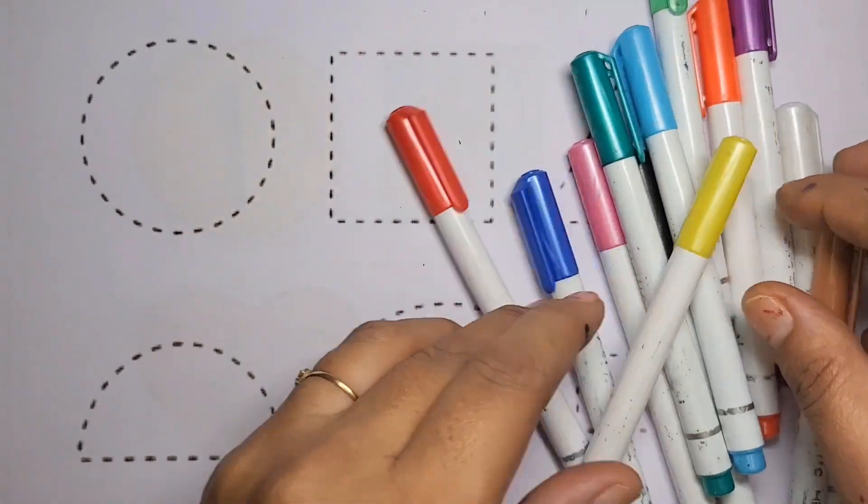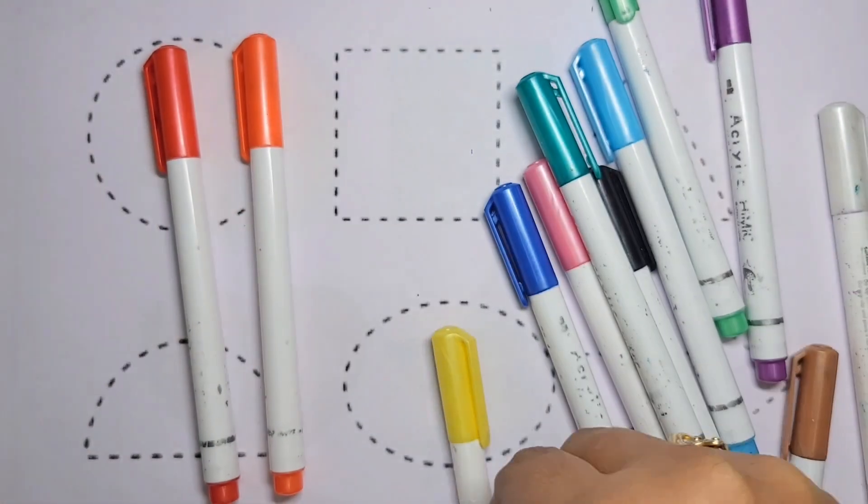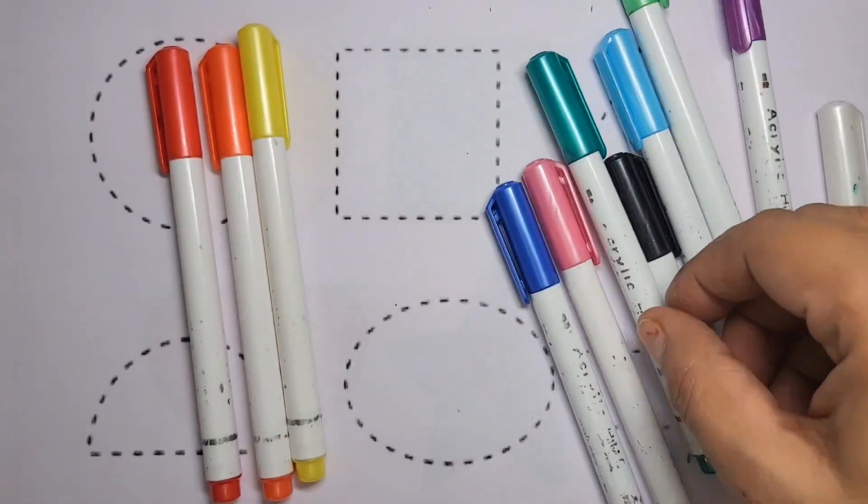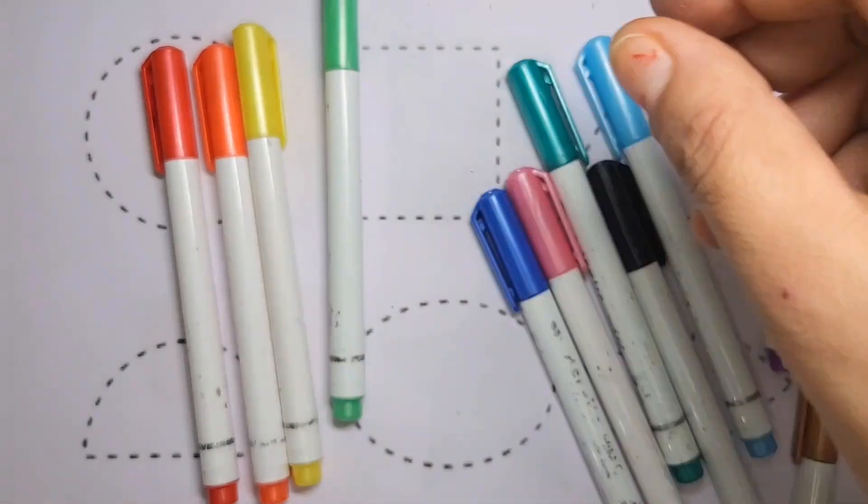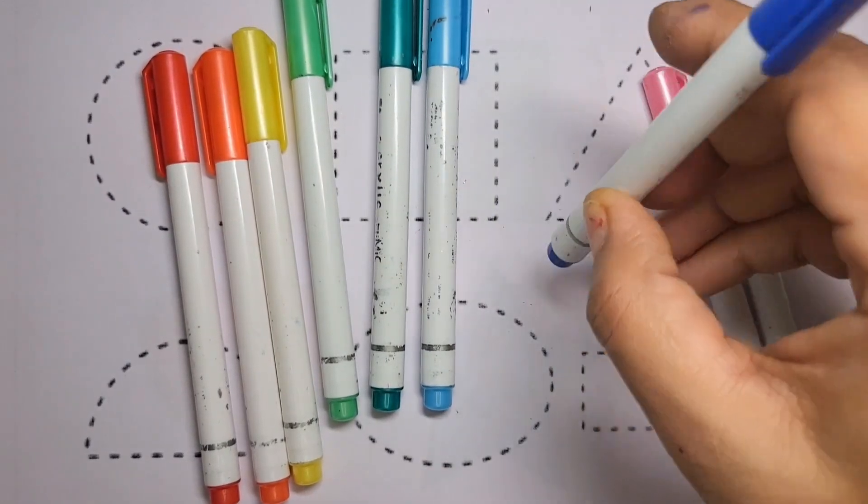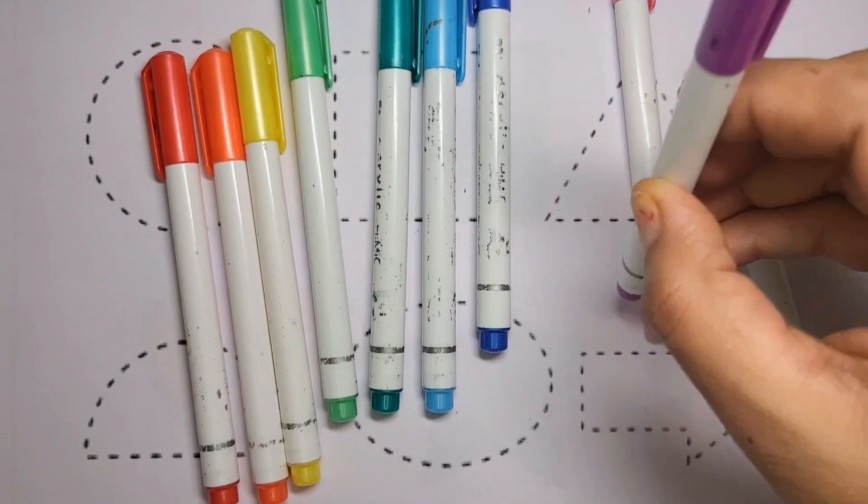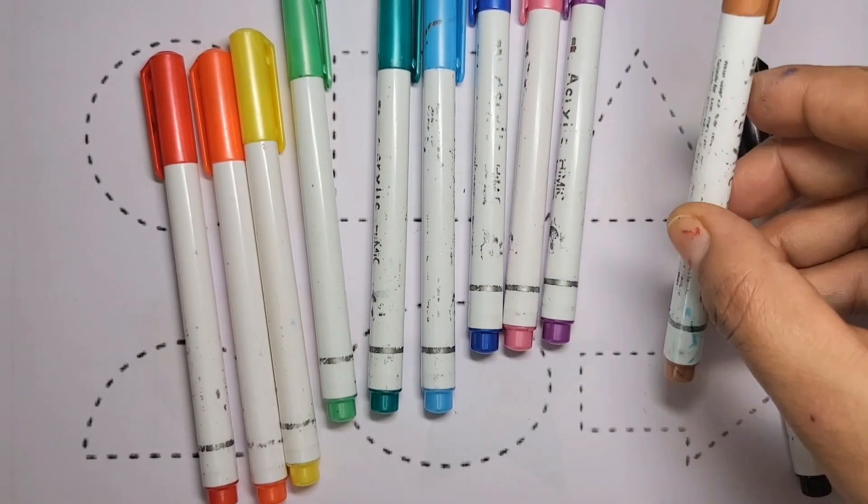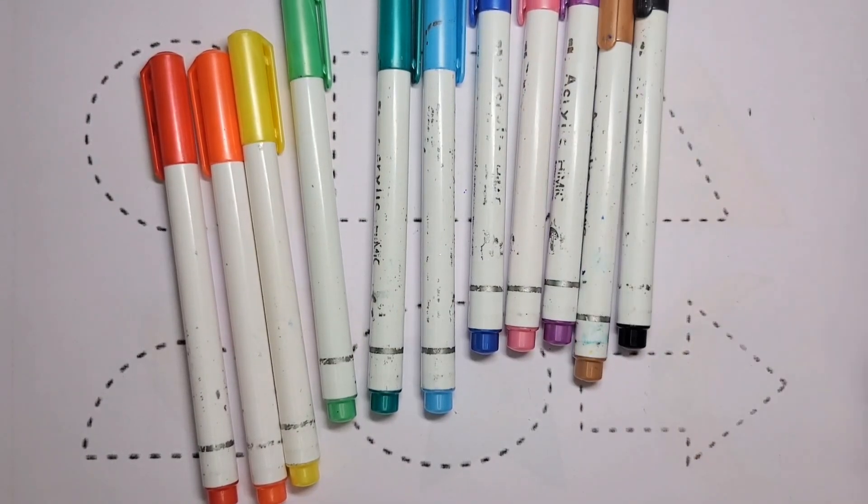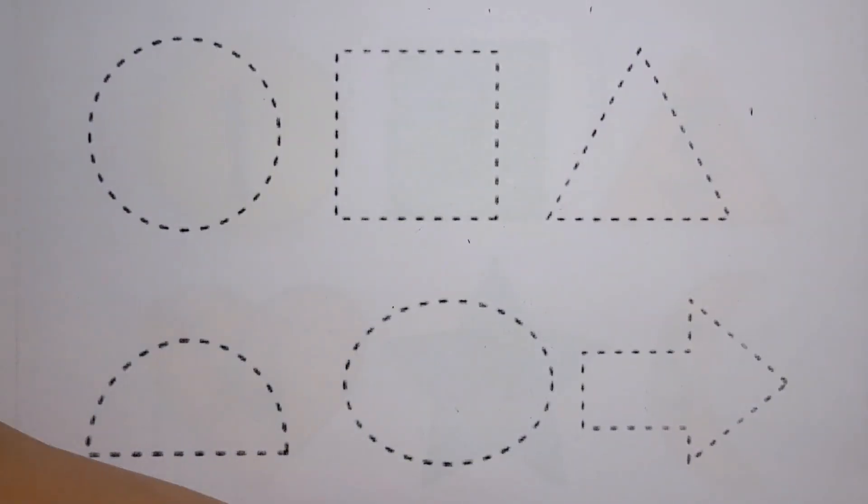Wow, there are many colors. Red color, orange color, yellow color, light green color, dark green color, light blue color, dark blue color, pink color, purple color, brown color, black color, white color. Let's start colors.